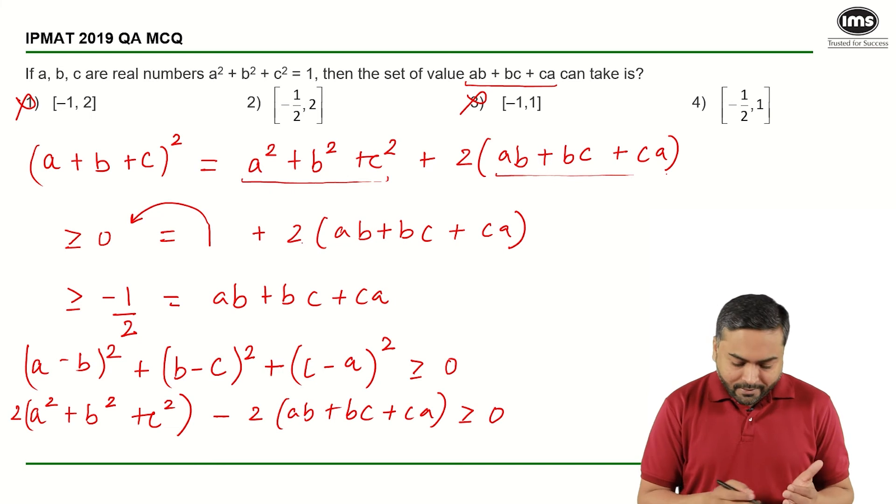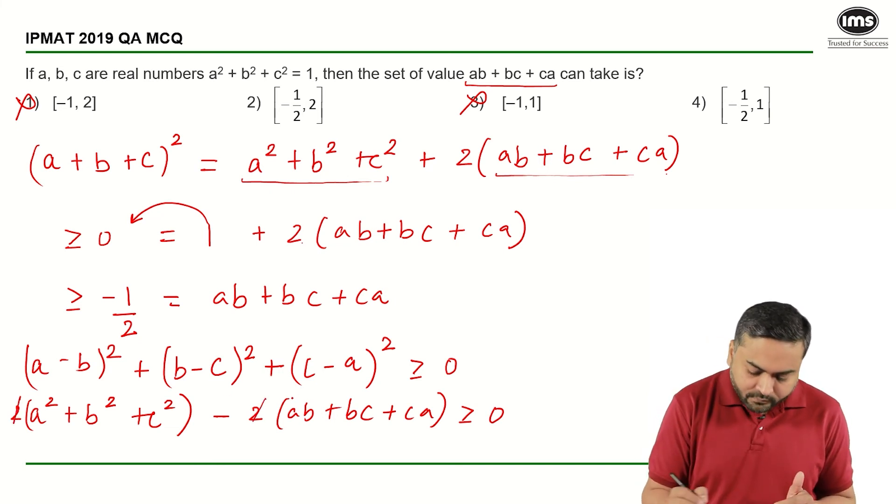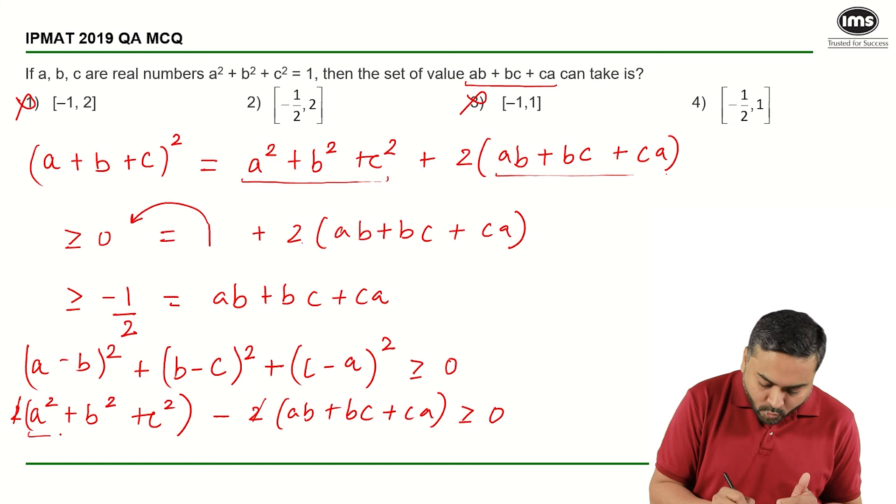Now if I simplify, I can cancel this 2 here and this is equal to 1, I know that.